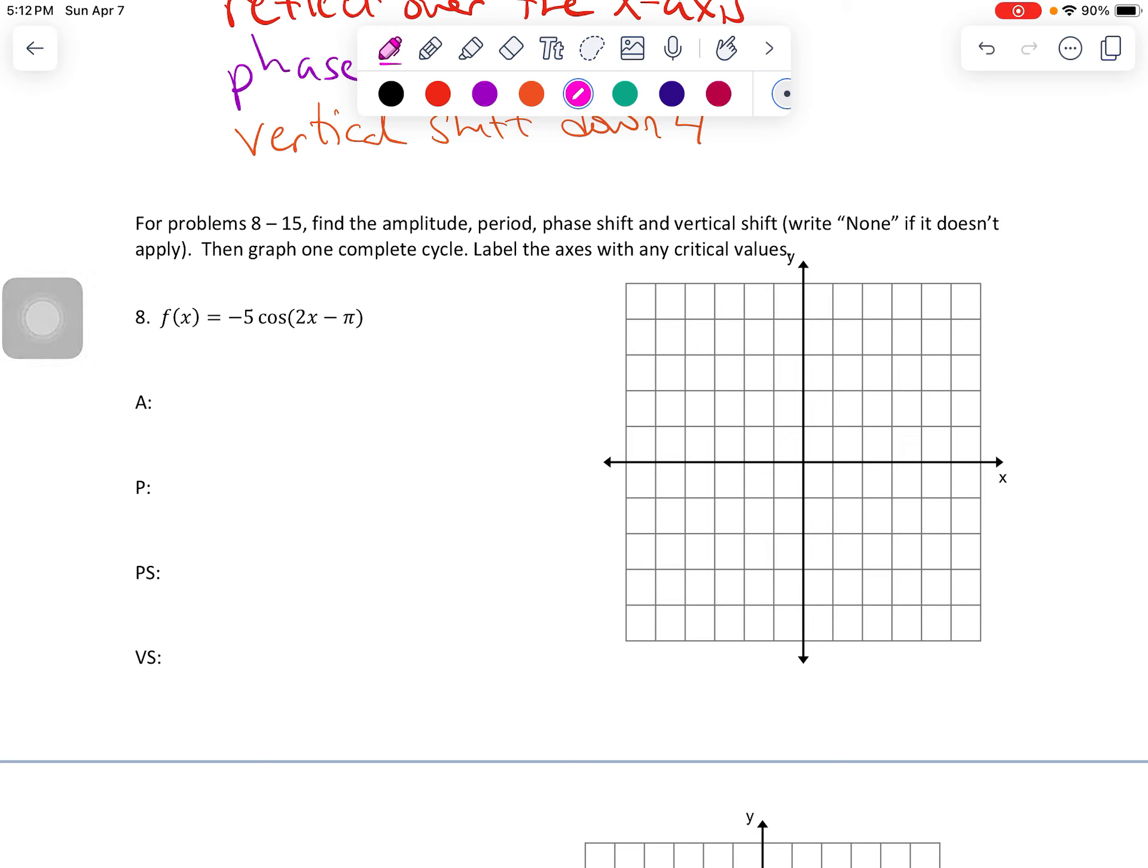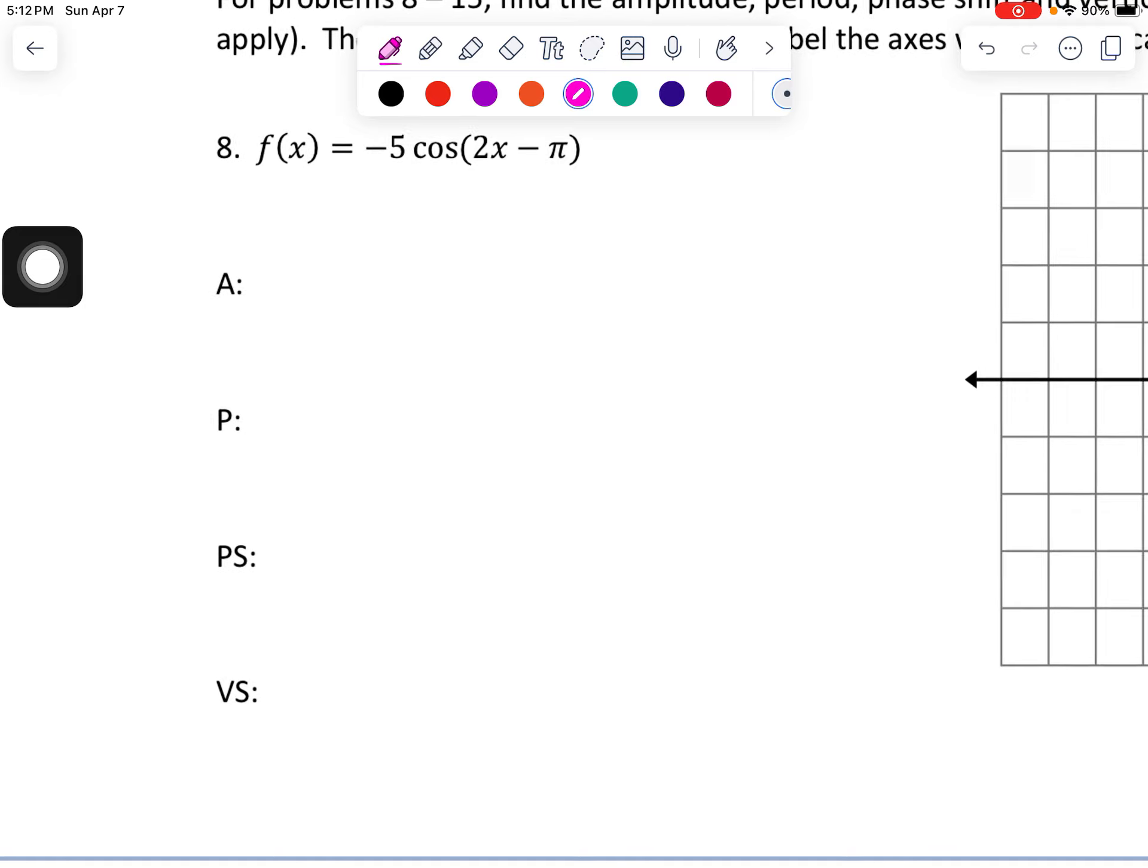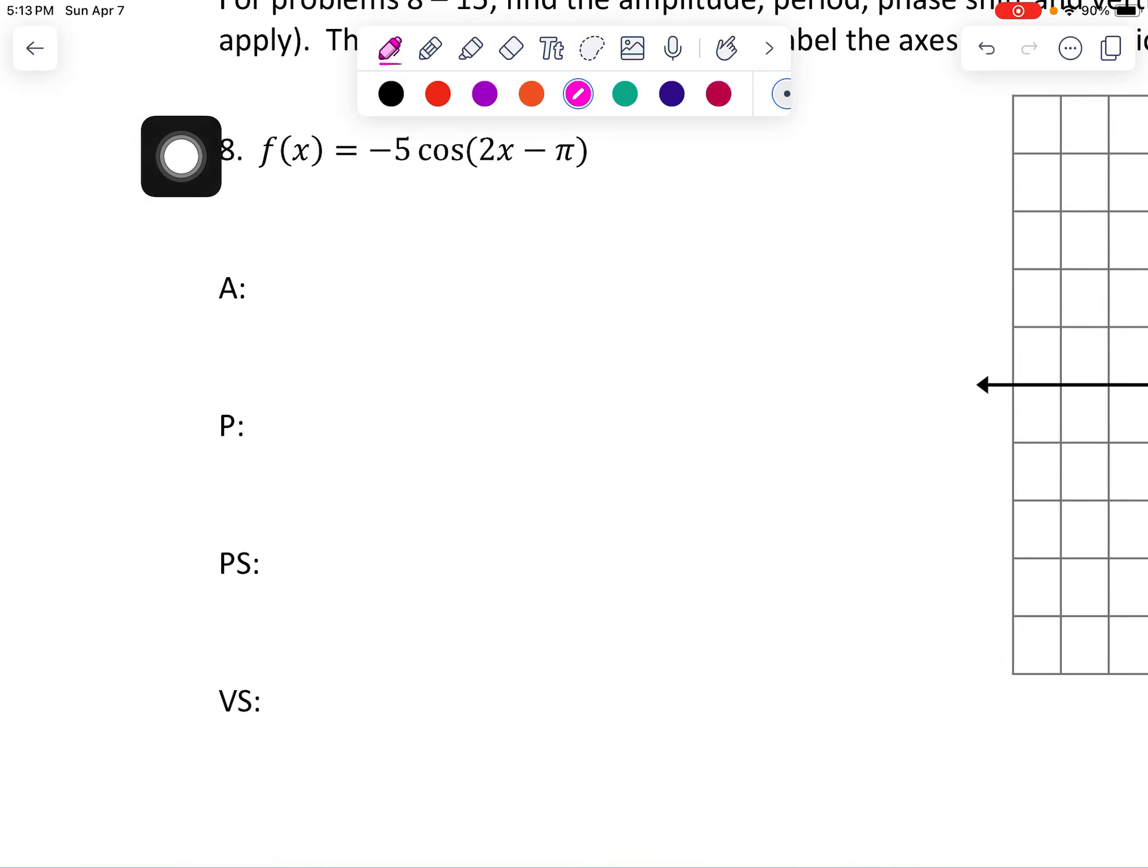So I need you to identify amplitude, period, phase shift, and vertical shift. If one of those things does not exist, the directions say to write none. So if you have an equation that doesn't have a phase shift, then you just write none. Graph one complete cycle. Label the axes with any critical values. So first thing I'm going to do is just take a look at my equation and identify the important bits.